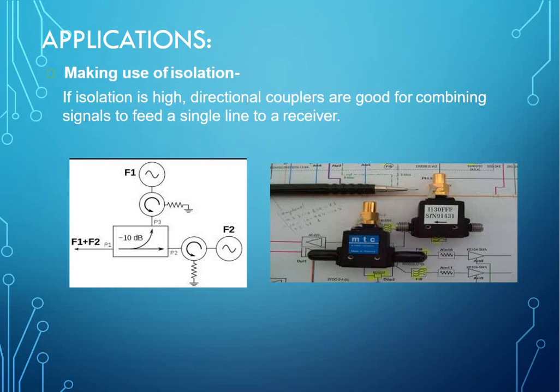Next is making use of isolation. The isolated port has its own use. If isolation is high, directional couplers are good for combining signals to feed into a single line to a receiver.